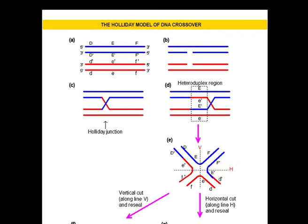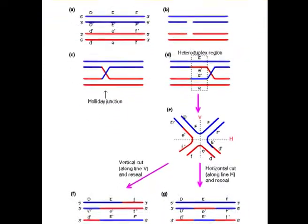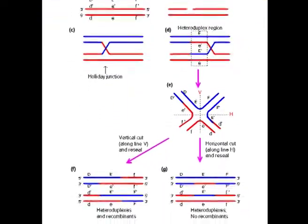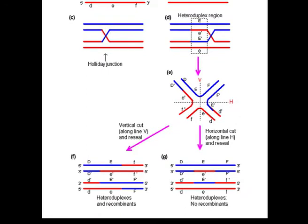Next, the cut in one strand of both the DNAs occurs. The cut strands cross and join homologous strands forming the Holliday structure or Holliday junction. Next, a heteroduplex region is formed by branch migration. Resolution of the Holliday structure occurs by cutting DNA strands along either the vertical line or the horizontal line. The vertical cut will result in crossover between F, F prime and capital F, F prime regions. The heteroduplex region will eventually be corrected by mismatch repair.